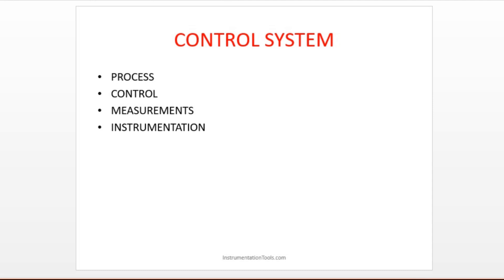If you mix up all these steps, you cannot get the proper cake. This is a simple example for a layman to understand what a process is — you have to follow steps one by one to get the desired output. Anyone can bake a cake, but to get the perfect cake you have to follow the procedures. That is called a process.